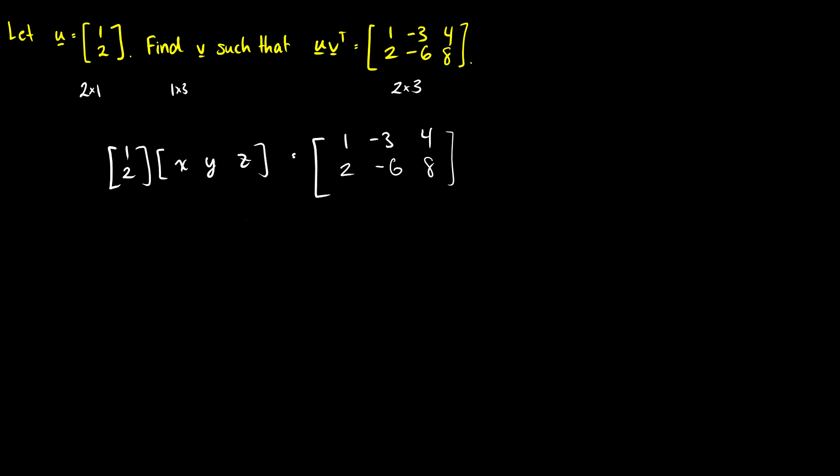So the easiest way to do this is to just remember that the first column vector here, [1, 2], is just going to be x multiplied by the vector [1, 2]. The second column vector, [-3, -6], is just going to be y multiplied by the vector [1, 2]. And similarly, the third column vector [4, 8] in our matrix is just going to be z multiplied by the vector [1, 2].